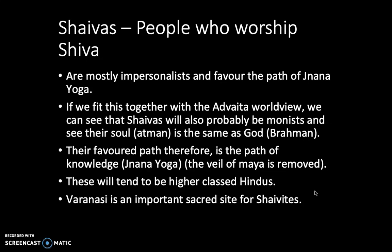Just as before, just because it's common for Shaivites to follow Advaita Vedanta doesn't mean they can't follow Dvaita as well. The favored path here is the path of knowledge — Jnana Yoga — using wisdom and reasoning to understand the world, and then seeing beyond that to true reality, which is permanent and is Brahman: removing the veil of Maya and seeing what is really there. This tends to be favored by perhaps higher-class Hindus, and there are fewer Shaivites overall. Varanasi is a particularly important sacred site for Shaivites, though there are others — Shiva is still one of the most popular gods in Hinduism.